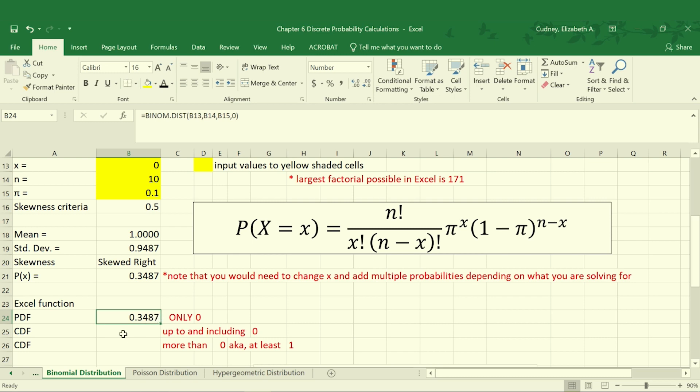Now our cdf is our cumulative. So it's the same calculation, however at the end we're selecting true or 1, so it's getting cumulative. So everything up to and including in this case 0. So when we do that calculation we will get the same value because we're not adding anything before 0. And if we want anything that's the opposite side of this as at least 1, so 1 or more defects, that would be 1 minus what we've solved for before, so 0.6513.